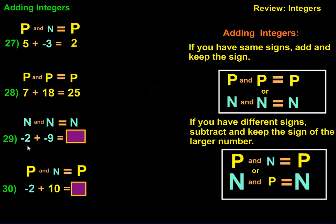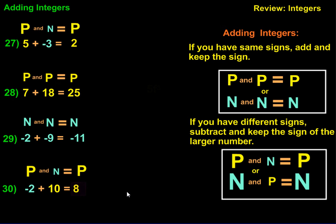For number 29, we have negative 2 plus negative 9. Remember, if the signs are the same, you add them and keep the sign. In this case they're two negatives, so we're going to keep a negative answer. 9 plus 2 is 11, and we keep the negative sign. For number 30, we have a large positive and a small negative. Even though the numbers are reversed, the positive is connected to the 10 and the negative is connected to the negative 2. The order doesn't matter — we have two different signs, so we subtract and keep the sign of the larger. So we keep a positive answer: 10 minus 2 is 8, and it stays positive.